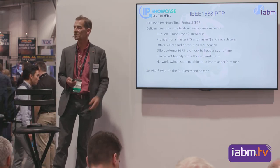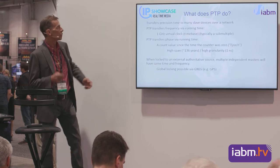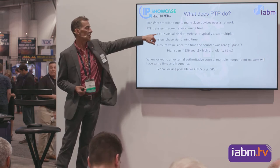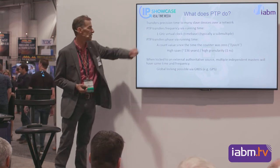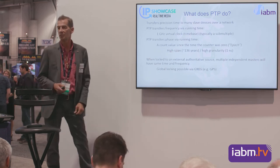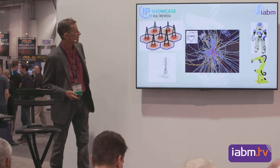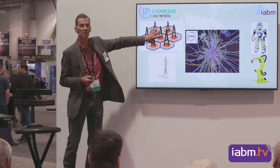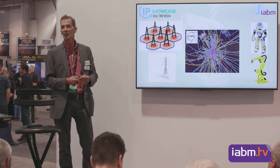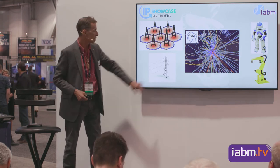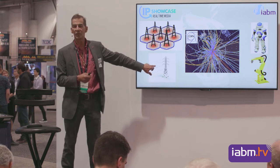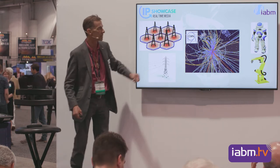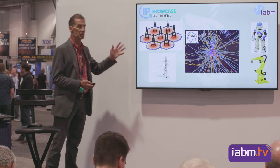But where's the frequency and phase? They didn't know anything about us when they wrote this. What PTP does is transfer precision time with granularity of one gigahertz — therefore one nanosecond granularity — over a time span of 136 years. It's used widely: it synchronizes the cell phone network, the power distribution grid where a 0.01-degree phase error at 60 Hz with 500 megawatts is a lot of energy, robotics, CERN, and now SMPTE.